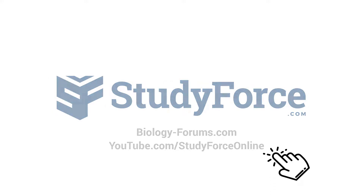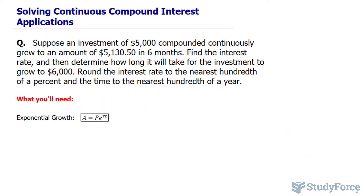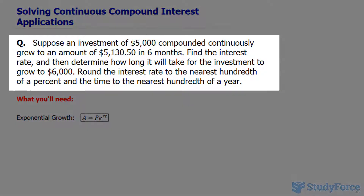In this lesson, we'll look at an application problem involving continuous compound interest. The question reads: suppose an investment of $5,000 compounded continuously grew to an amount of $5,130.50 in 6 months. Find the interest rate and then determine how long it will take for the investment to grow to $6,000.